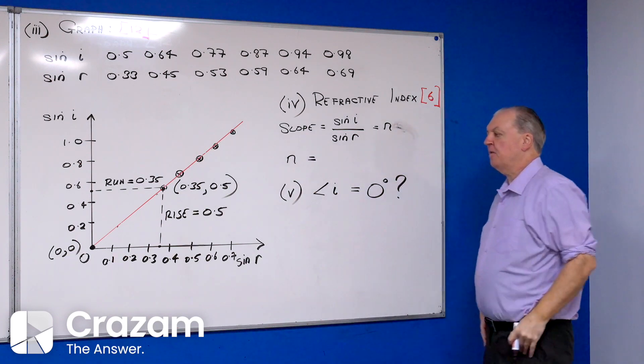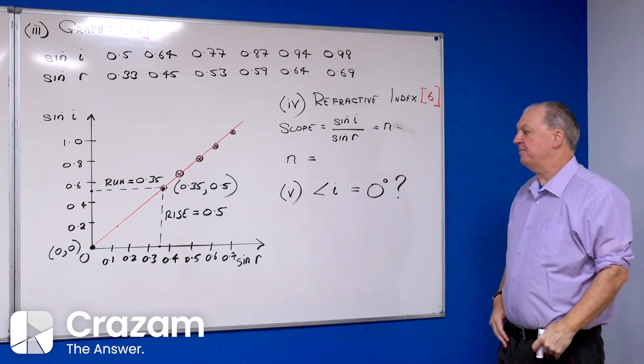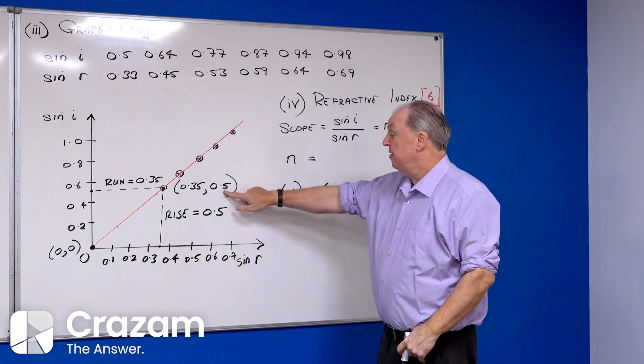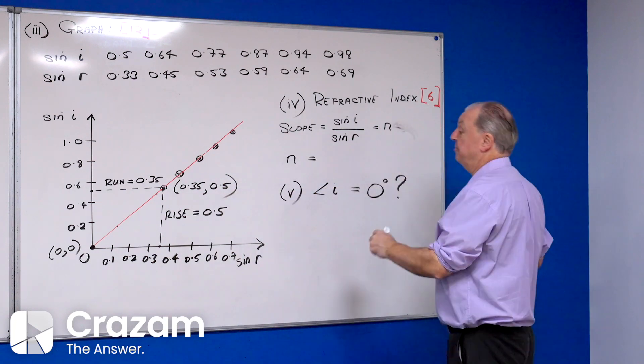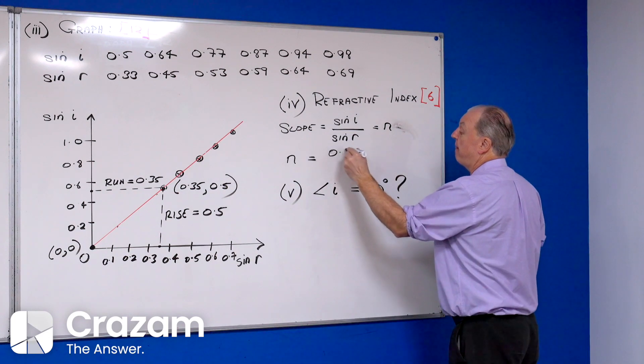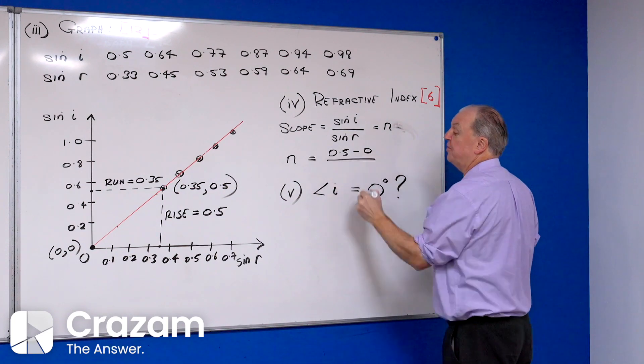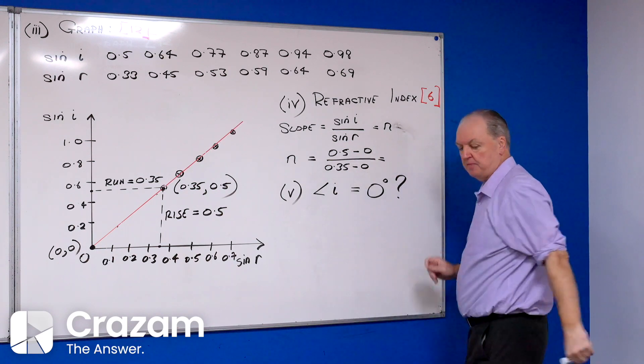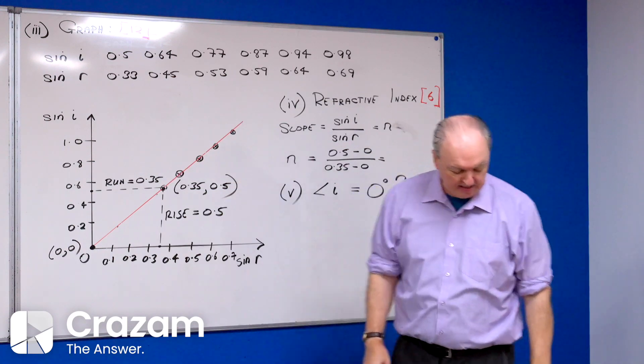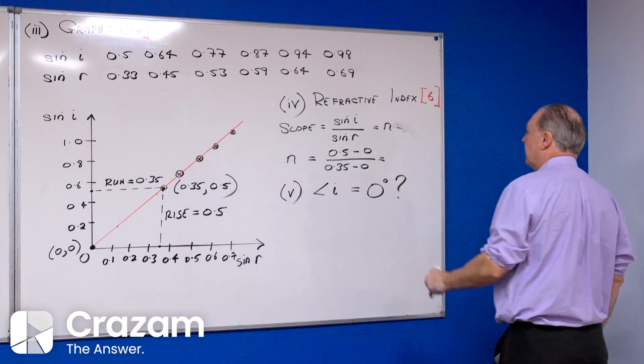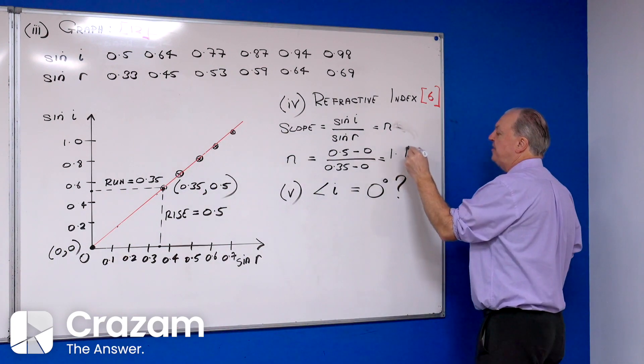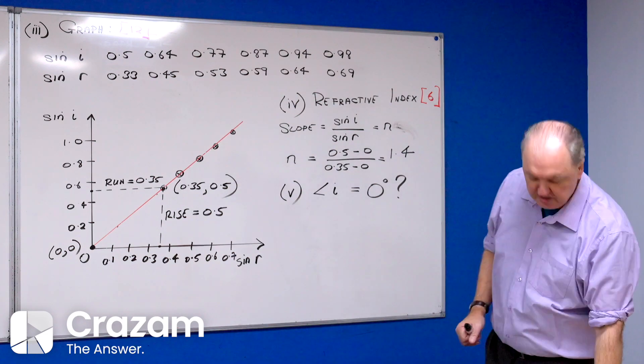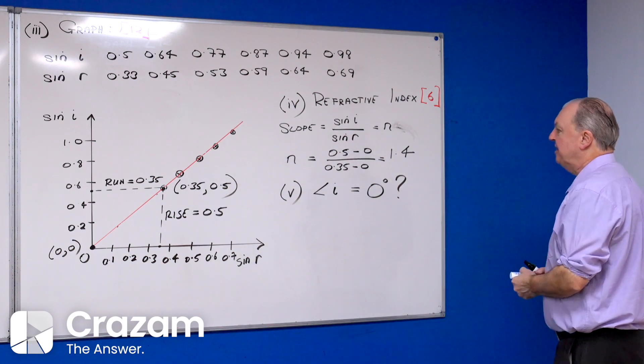Let me work out what n is. When I calculate, the rise is going to be 0.5 minus 0, all over the run which is 0.35 minus 0. Put that into my calculator, I get a refractive index of around 1.4. Six marks for that.